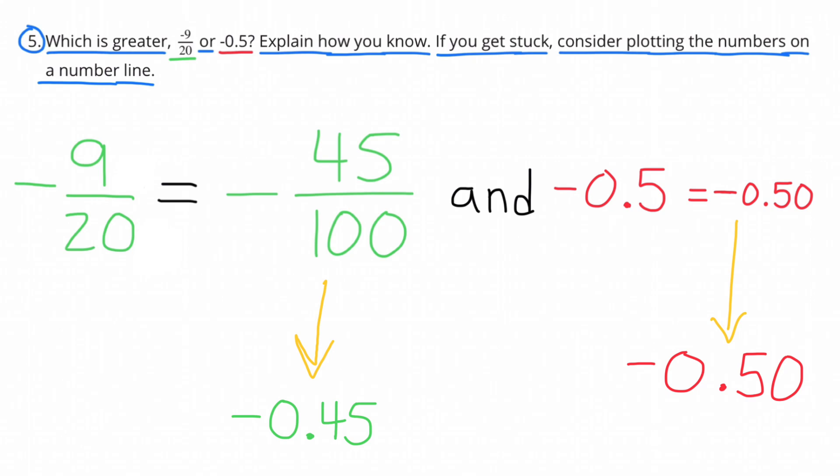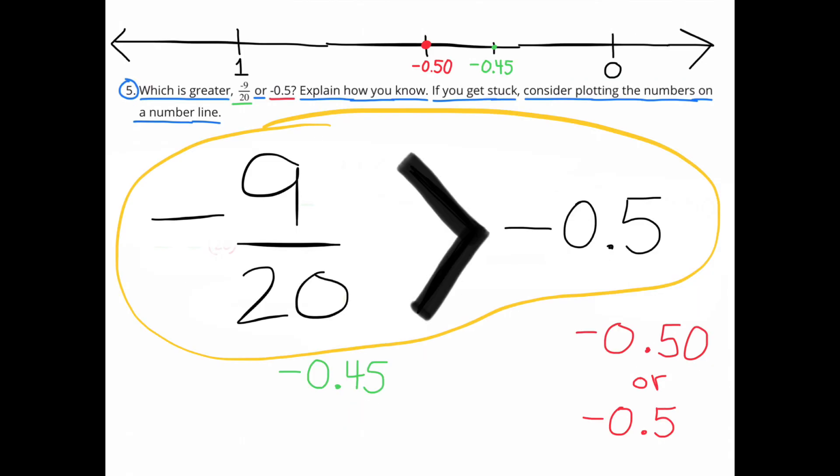So when we compare negative 45 hundredths with negative 50 hundredths, it gets even easier if I put it on a number line. Negative 50 hundredths is smaller than negative 45 hundredths. It's further to the left. So negative 9 twentieths is greater than negative 5 tenths.